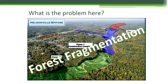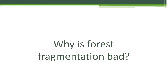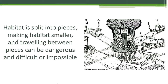The bypass cuts right through the forest, which leads to forest fragmentation. So why is forest fragmentation a bad thing? When the forest is fragmented, the habitat of native species is fragmented. As the habitat is split into pieces, the pieces become smaller and traveling between the pieces can be dangerous or impossible. Think of roadkill — those are animals that risk traveling from one habitat piece to another and were killed in the process.